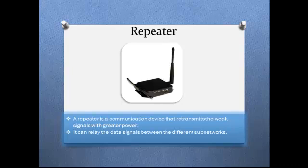A repeater can relay data signals between different subnetworks. It operates at the physical layer of the OSI model and is not as intelligent a device as switches and routers, which perform smart routing based on the MAC and IP addresses of the source and destination computers.